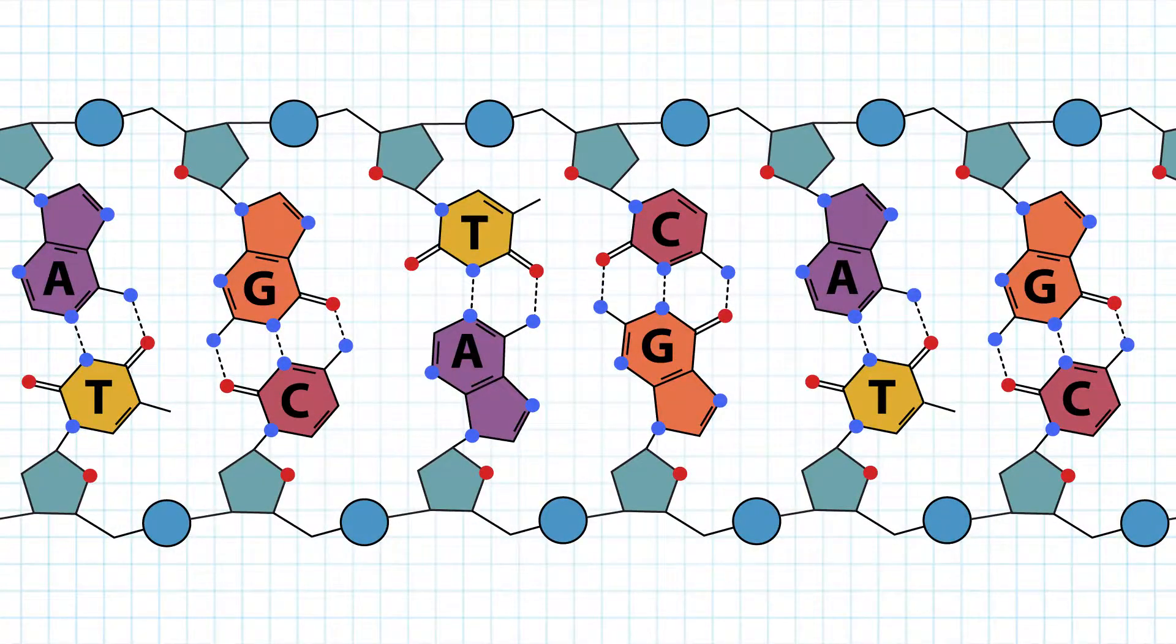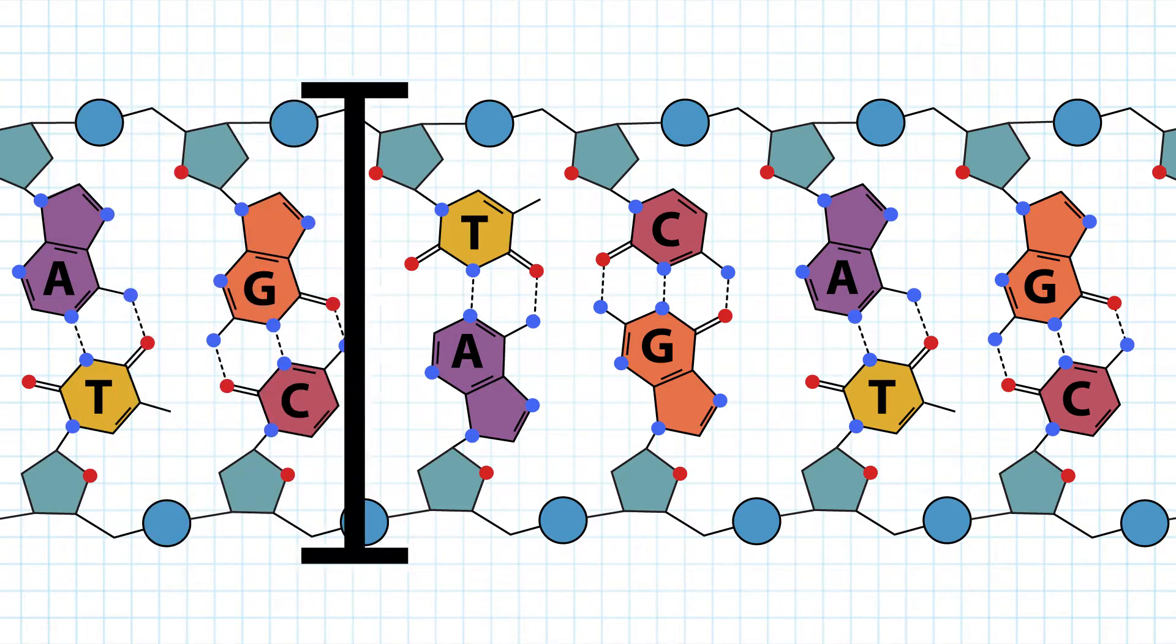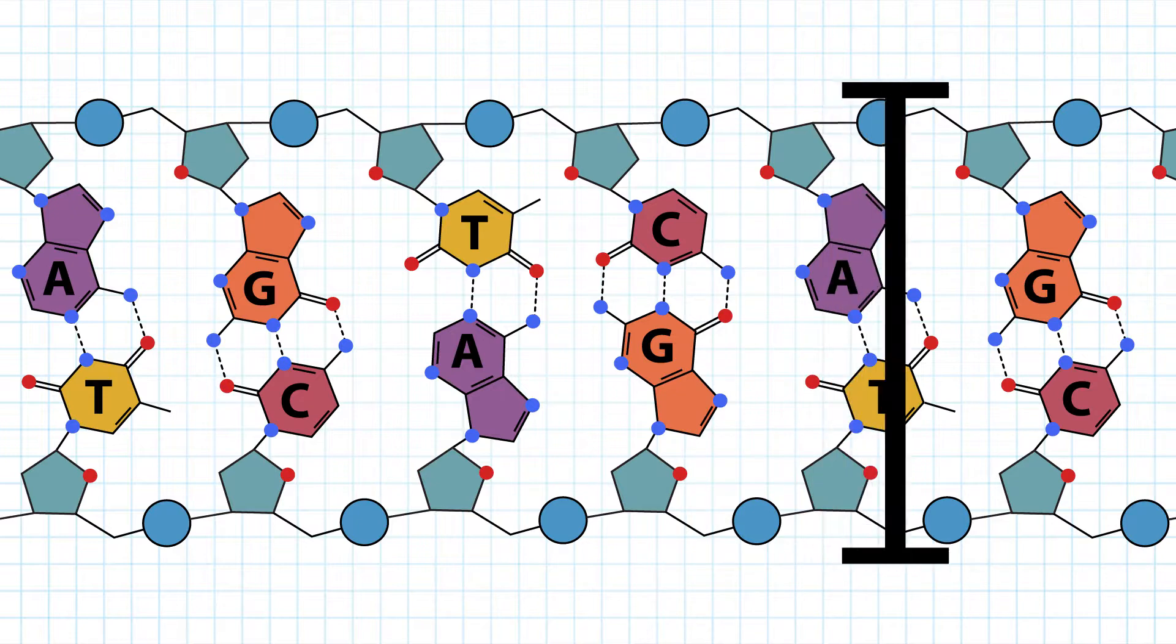The geometry of the AT, or TA, and GC, or CG base pairs is the same, allowing for symmetry and base stacking in the helix. This mostly has to do with the distance between the backbones and the angles to which the base is attached to the backbone.